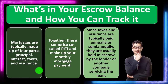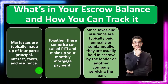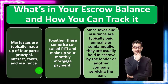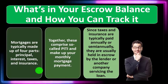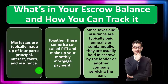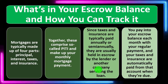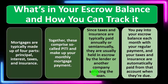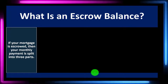Because monthly payments don't always line up exactly with what we're paying out — since taxes and insurance are paid only once or twice a year — you pay into your escrow balance each month with your regular payment, and your taxes and insurance are automatically paid from that account when they're due.